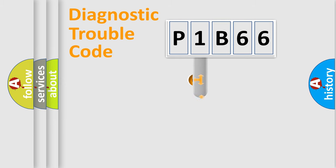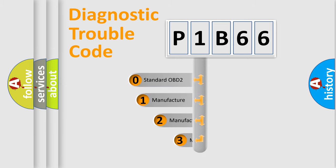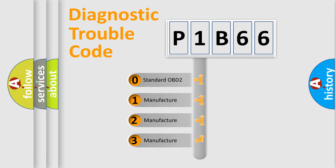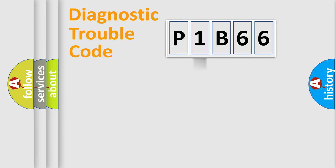This distribution is defined in the first character code. If the second character is expressed as zero, it is a standardized error. In the case of numbers 1, 2, or 3, it is a more precise expression of the car-specific error.